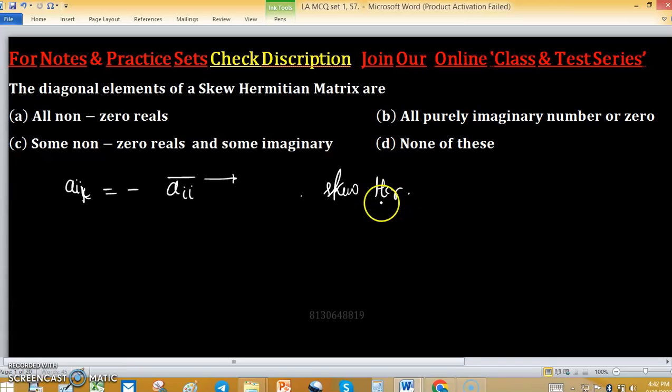When i equals j for principal diagonal elements, this condition is true only when Aii is either 0 or purely imaginary.